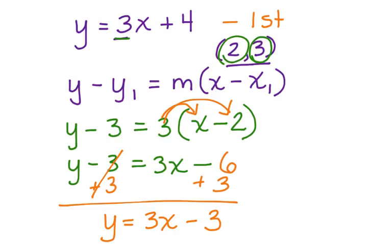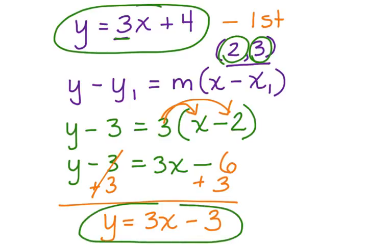Now, we have two equations. We have y equals 3x plus 4, and we have y equals 3x minus 3. Here are the two equations that we're going to work with, and we're going to graph these lines and see if they're parallel.